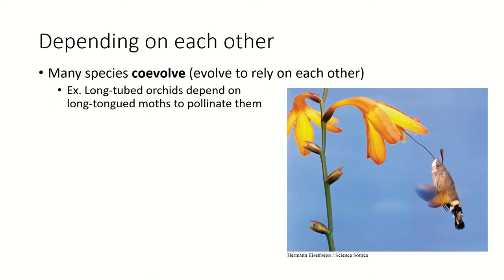A lot of organisms depend on other organisms and actually force each other to evolve in specific ways — we call this co-evolution, where two things evolve to rely on each other and evolve together. This is an example: a long-tubed orchid and a long-tongued moth that pollinates it. Both depend on the other for their lifestyle. This moth has developed an incredibly long tongue, long enough that when the moth gets its face into the orchid, the tongue can reach all the way back to the root of the flower where nectar is produced.